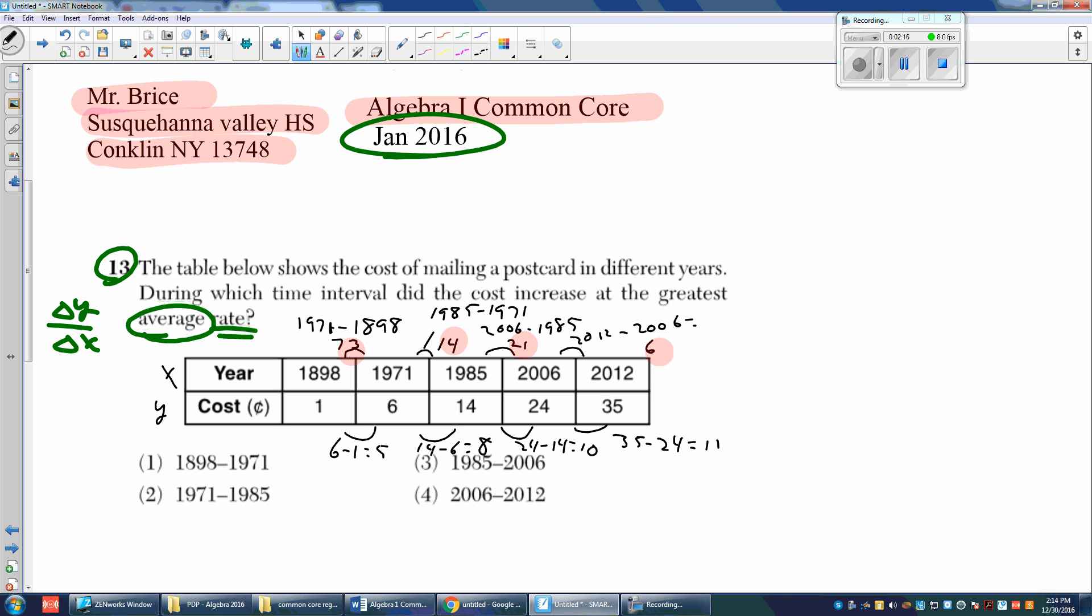Now we have to put our delta Ys over our delta Xs. So it's going to be 5 over 73, then the second one is 8 over 14, then I compare the 10 over 21, and the last one is 11 over 6. Now it says during which time interval did the cost increase at the greatest rate.